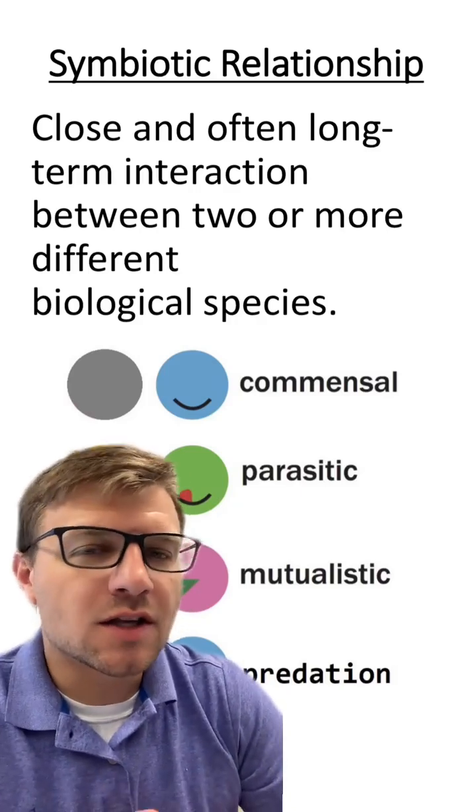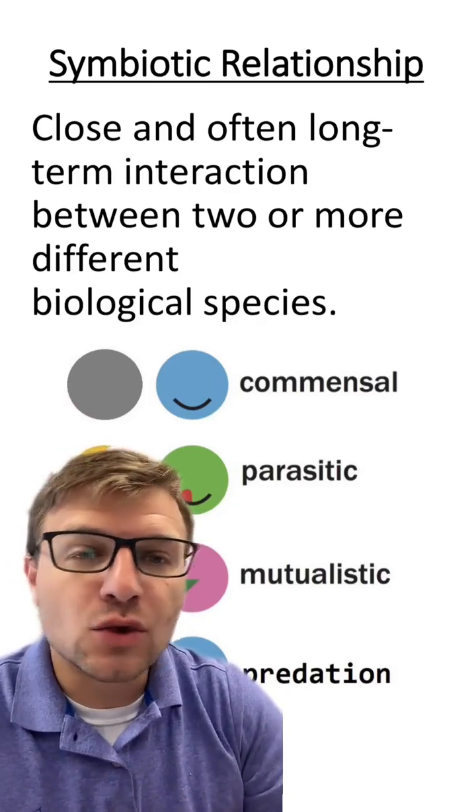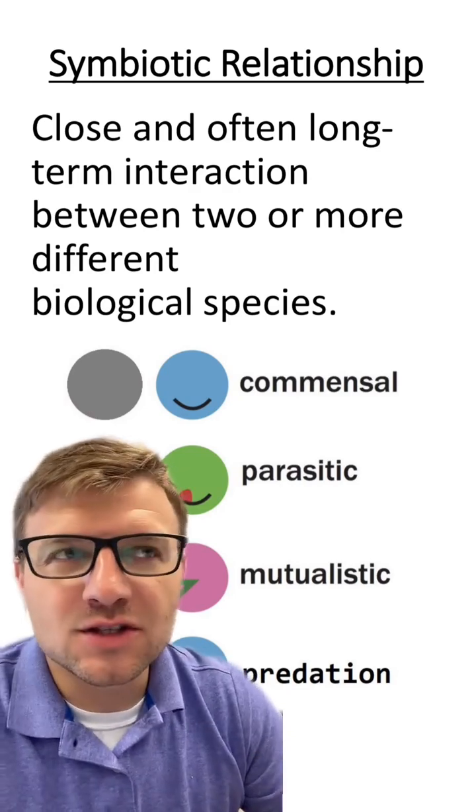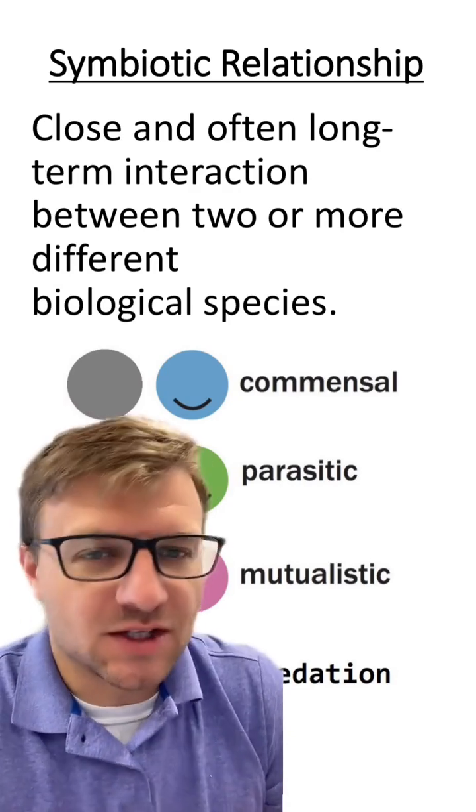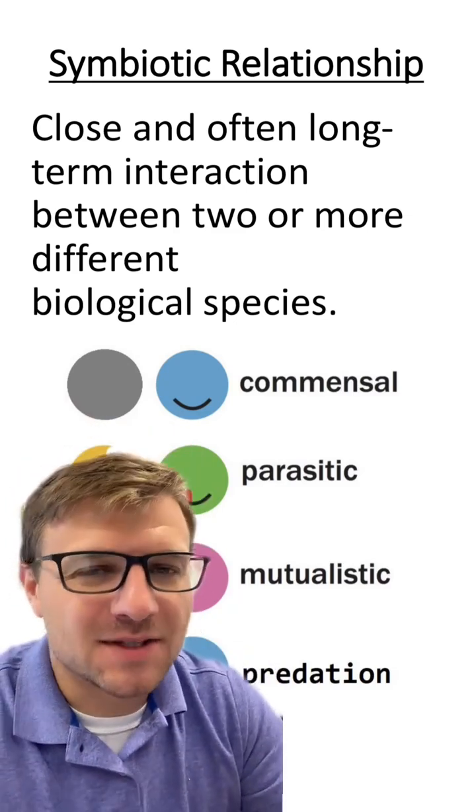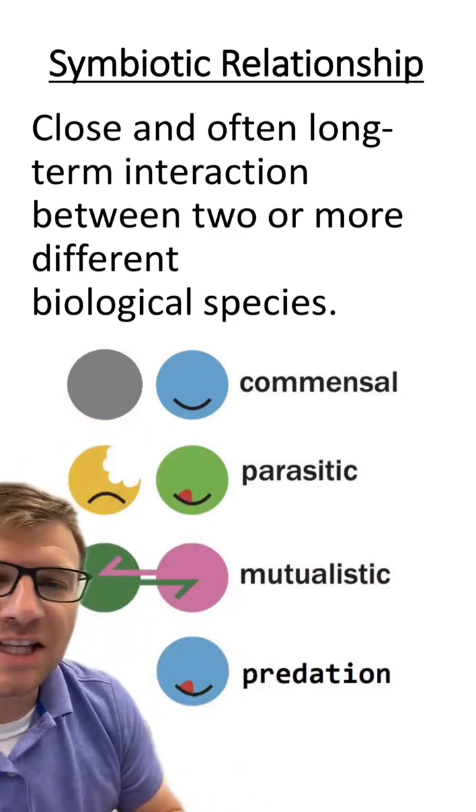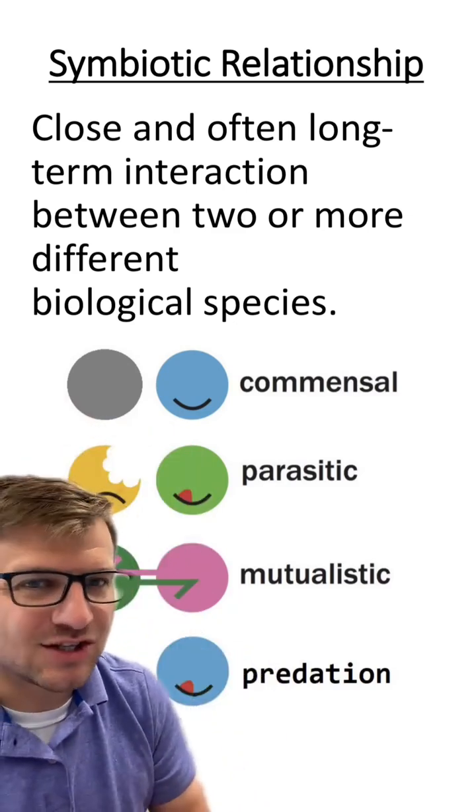Symbiotic relationships are close and often long-term interactions between two or more species. This is about the relationship between two species, and there are four different types: commensalism, parasitism, mutualism, and predation.